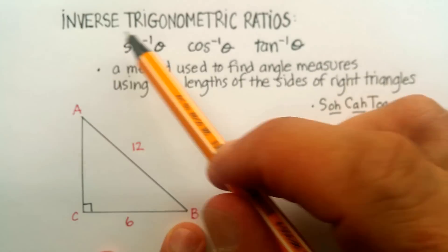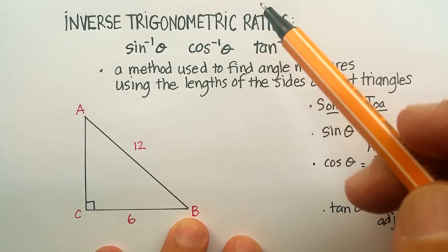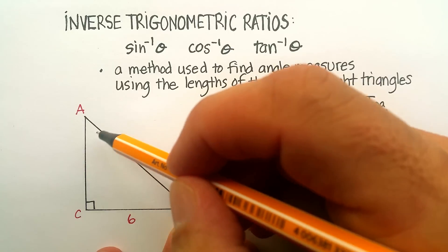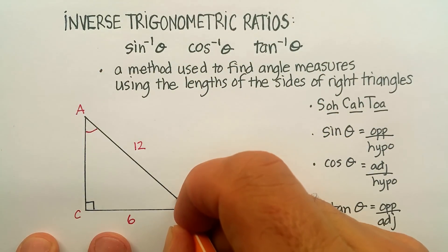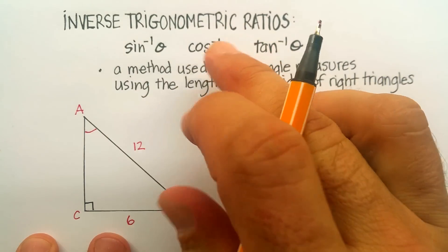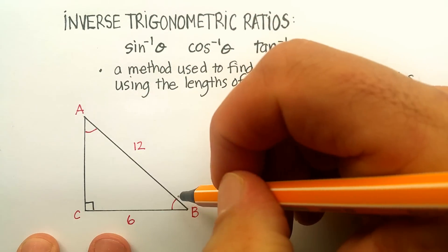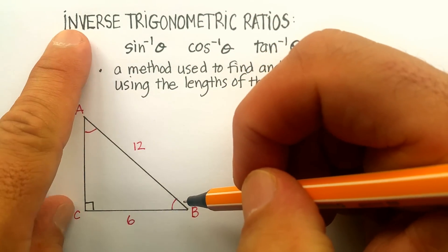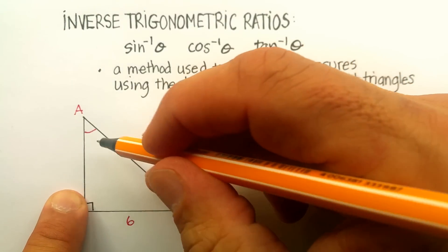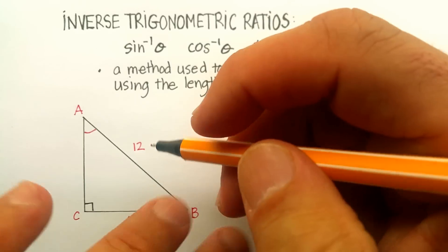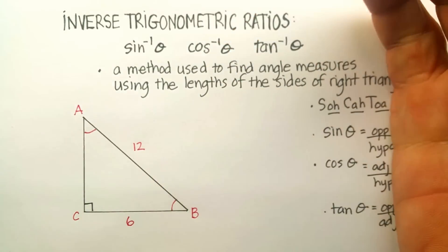Basically we use the inverse trig ratios to find the number of degrees of any angle. We use the regular trig ratios to find the lengths of the sides, but we use the inverse trig ratios to find the actual degrees. It's like reversing what we're using.